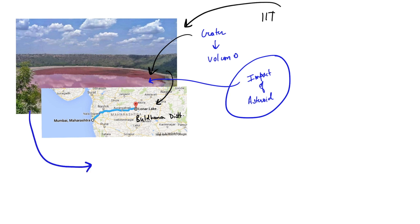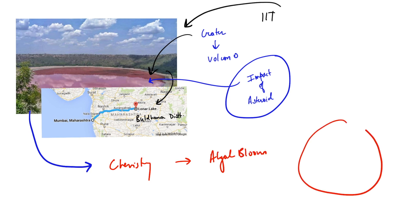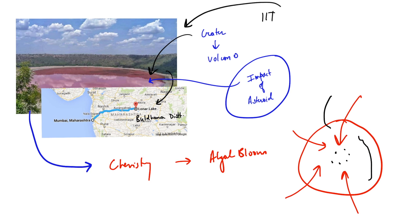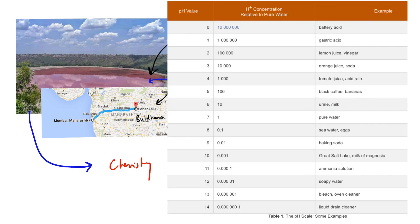Coming back to what could be the probable reason for the lake turning pink — if we talk about the chemistry of this lake, it has seen a very high algal bloom. Whenever there is a larger deposition of minerals such as nitrogen and phosphorus, there will be rapid growth of algae, because they thrive on these minerals. When their population increases, they consume the dissolved oxygen from the water, and as a result, all life forms die and marine life becomes impossible. Lonar Lake is an example of rampant algal bloom.